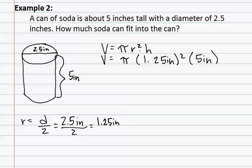We have volume equals the radius, or 1.25 inches, squared times the height, which was five inches. We start by doing the exponent and doing 1.25 squared, which gives us 1.5625 inches squared. This still needs to be multiplied by the five inches and the pi.